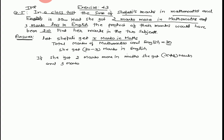3 marks less in English. Therefore 30 minus x marks were obtained, minus 3, means 27 minus x marks.